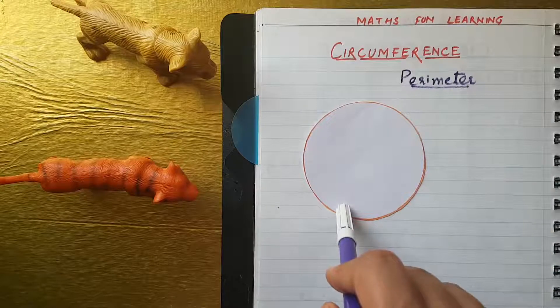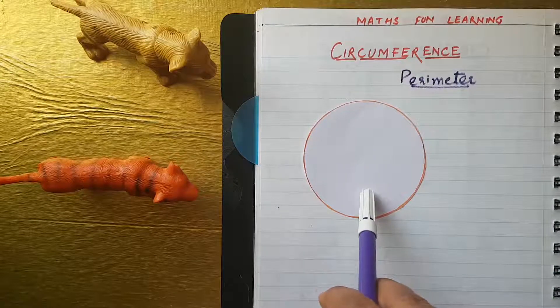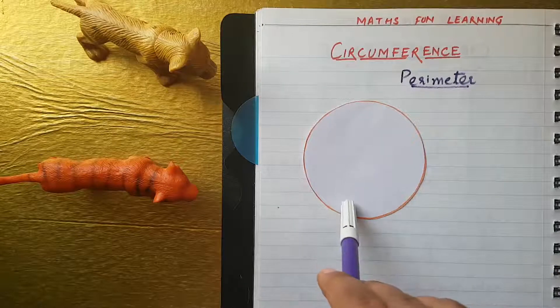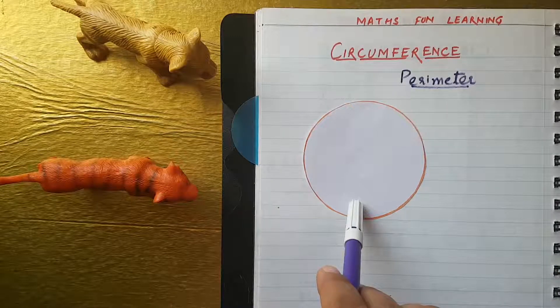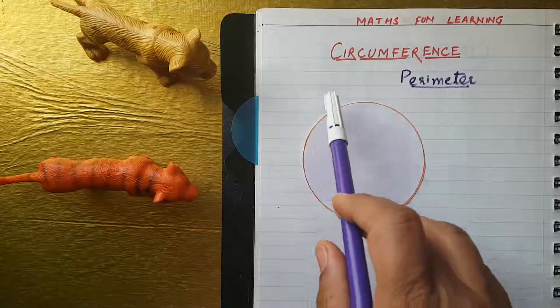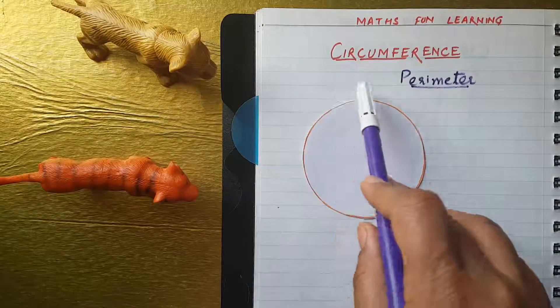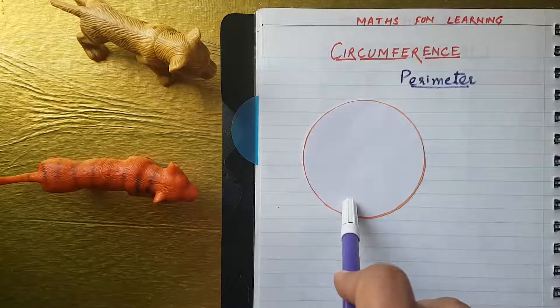Okay, as you know that, this is a circle. Let's find out the circumference of it. Yeah, circumference means the outer boundary. We have to count it. Let's do one small activity.